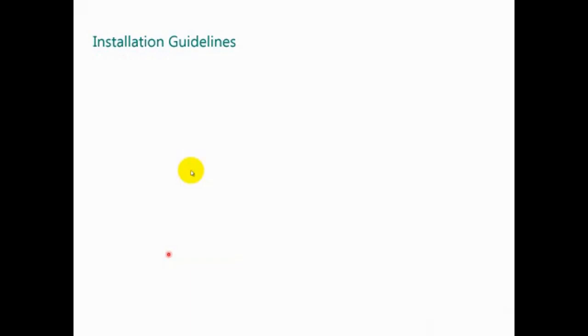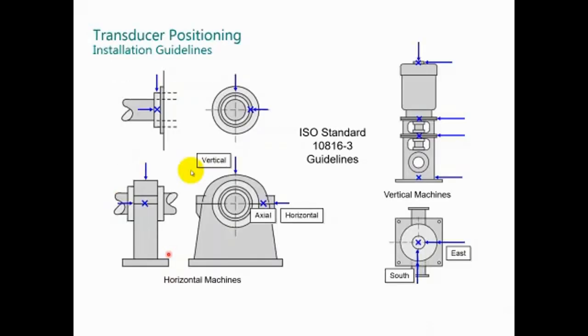The installation guidelines. For any case-mounted transducer, there's the positioning, the mounting, the adapters, boots, housing, and power signal. The transducer position depends on the ISO 10816-3 standard - how to install case-mounted transducers in different machines. This is the recommendation from vertical machines, from horizontal machines. This is true vertical, true horizontal, and axial. For vertical machines, you need to install X, Y, and axial. Please refer to the ISO standard before selecting the installation.